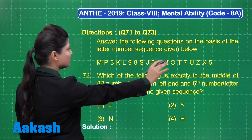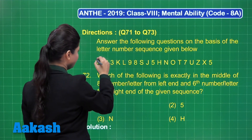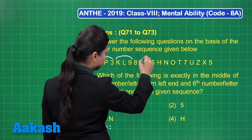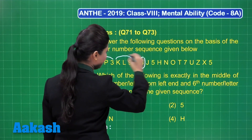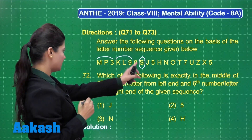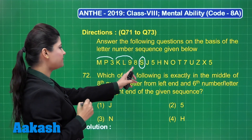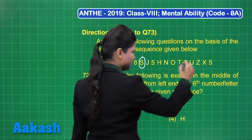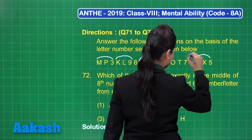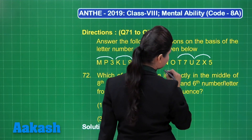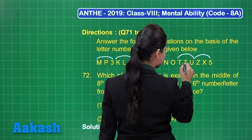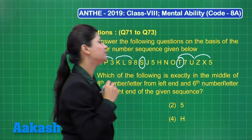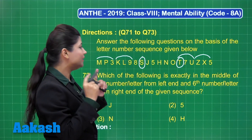Counting through the sequence — three, six, nine — we find the eighth letter from the left end. Now let's figure out the sixth number or letter from the right end. Focusing on the sequence from the right, this is the sixth number or letter from the right end.